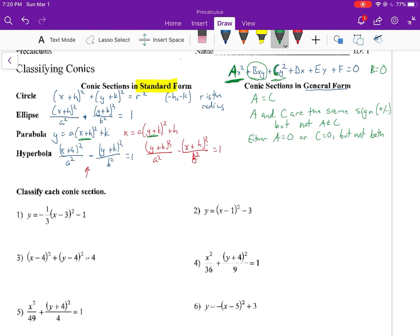And for a hyperbola, a and c are different signs. So one's positive, one's negative. And so with that information, you should be able to finish off this worksheet just by classifying each conic as either a circle, an ellipse, a parabola, or a hyperbola.